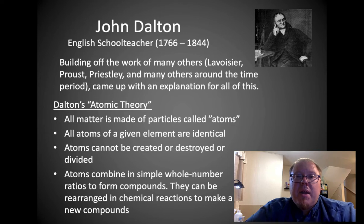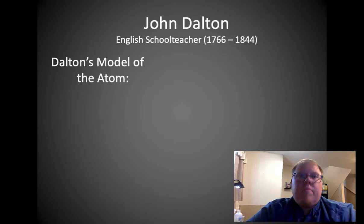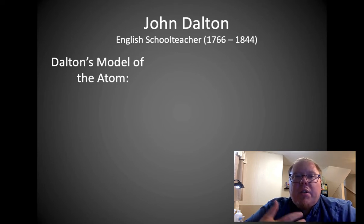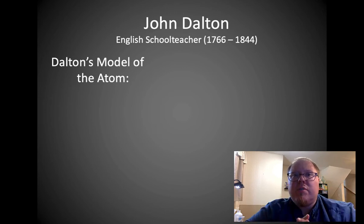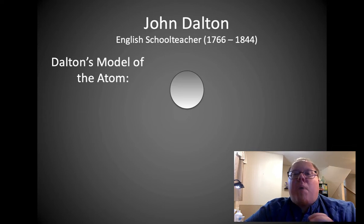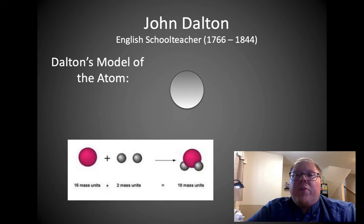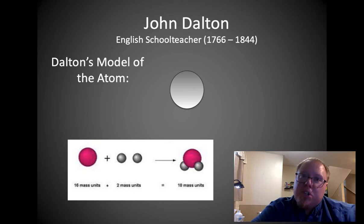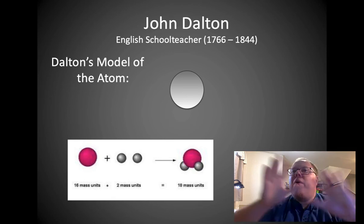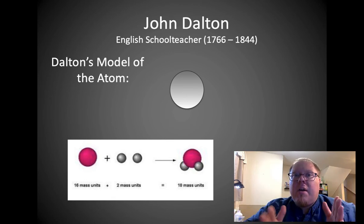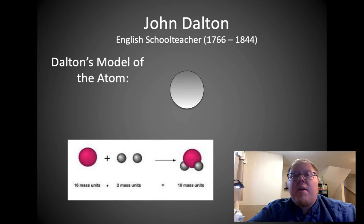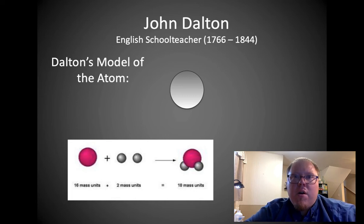Dalton's atomic theory has four parts. One: all matter is made up of particles called atoms. Two: all atoms of a given element are identical. Three: atoms cannot be created, destroyed, or divided. Four: atoms combine in simple whole number ratios to form compounds and can be rearranged in chemical reactions to make new compounds. Dalton's idea of what atoms looked like—he made models of it, drew pictures. He imagined atoms as little balls, little spheres. These balls could combine together to make compounds. Once you get a compound, that's a new substance made of original atoms. You can combine them in infinite ways to make all substances in the universe.